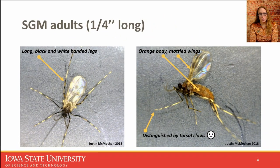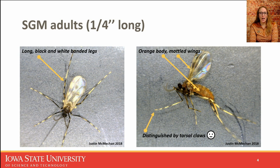Like all gall midges, they're small, fragile flies with long dangling legs, slender bodies, hairy bodies, and hairy wings. More specifically for soybean gall midge, it's about a quarter inch in length, with females being a little bit bigger. They have long black and white banded legs. If you turn it on its side, soybean gall midge has an orange body with orange and black mottled wings. To distinguish it from other midges in this genus, you have to look at the tarsal claws — basically the feet.